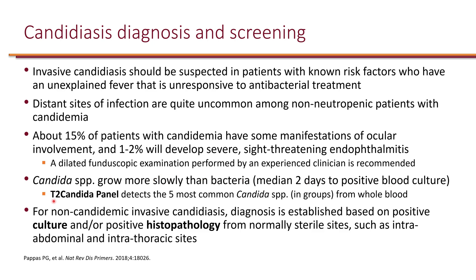One rapid diagnostic we have is the T2 Candida panel, which can detect not every candida species but the five most common. It reports them in groups, so it might not tell you exactly which of the five the patient has, but it can be done directly from whole blood — you don't have to wait two days for colonies to grow. Outside of the blood, diagnosis is essentially dependent on culture and/or positive histopathology from normally sterile sites, such as intra-abdominal or intra-thoracic sites.